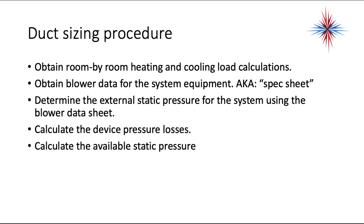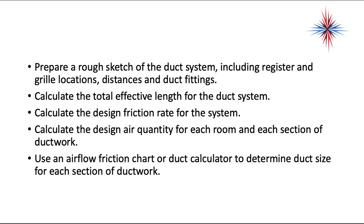To do duct sizing properly, you must obtain room-by-room heating and cooling load calculations, obtain the blower data for the system equipment (also known as a spec sheet), and determine the external static pressures using the blower data sheet. You need to calculate the device pressure losses and the available static pressure. Then prepare a rough sketch of the duct system including register and grill locations, distances, and duct fittings. Calculate the total effective length, the design friction rate, and the design air quantity for each room and each duct section. Then use an airflow friction chart or duct calculator to determine duct size for each section.